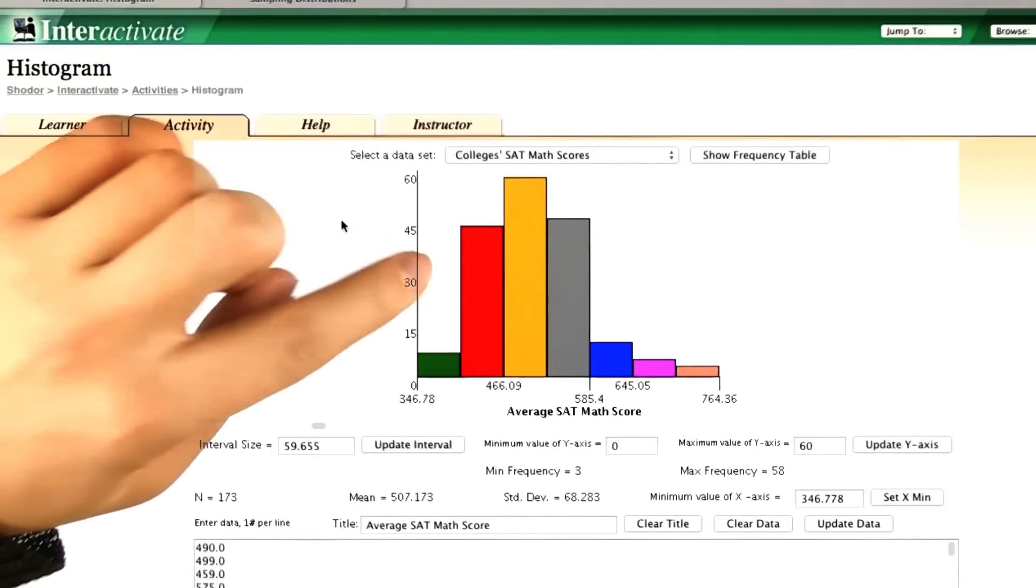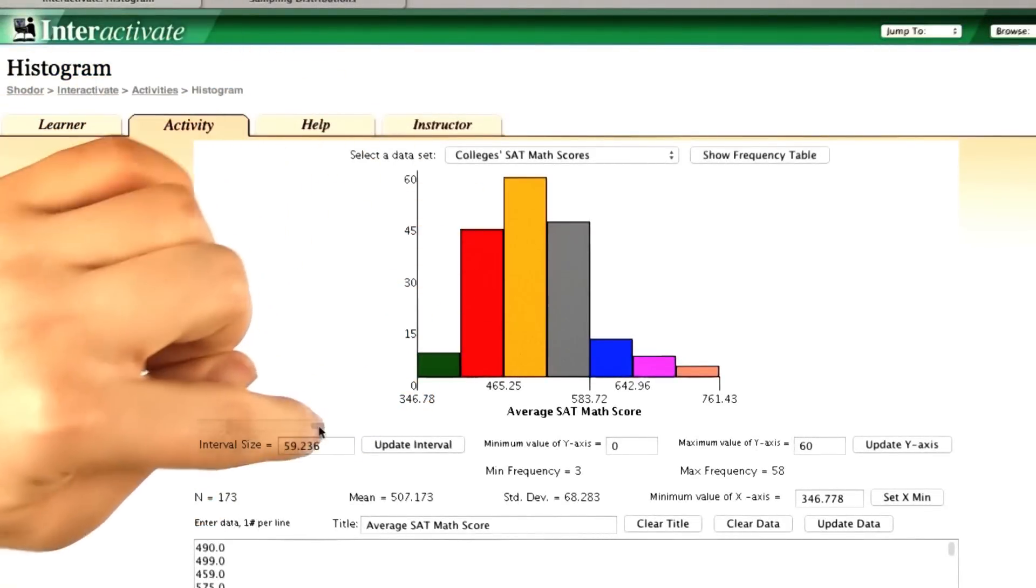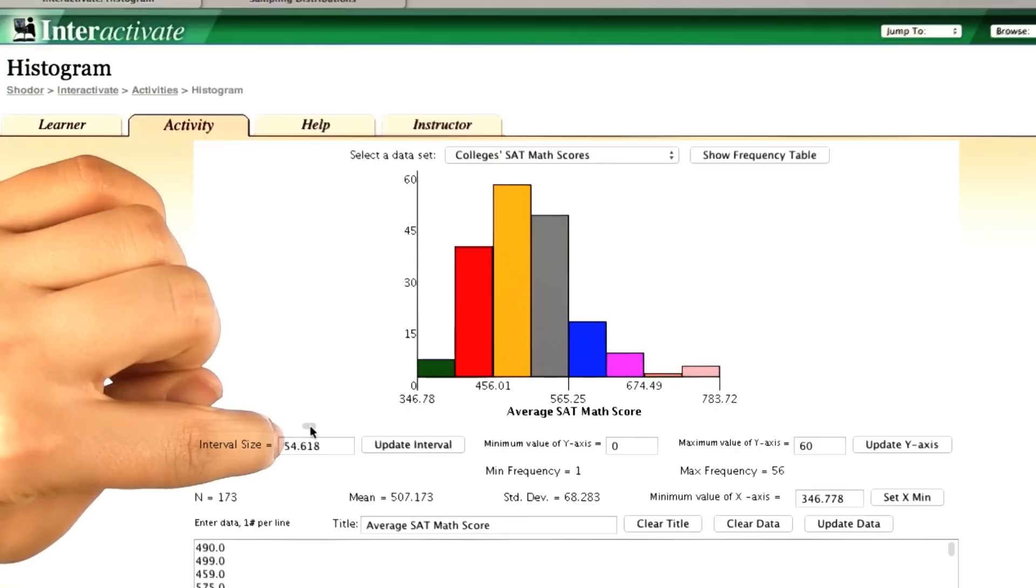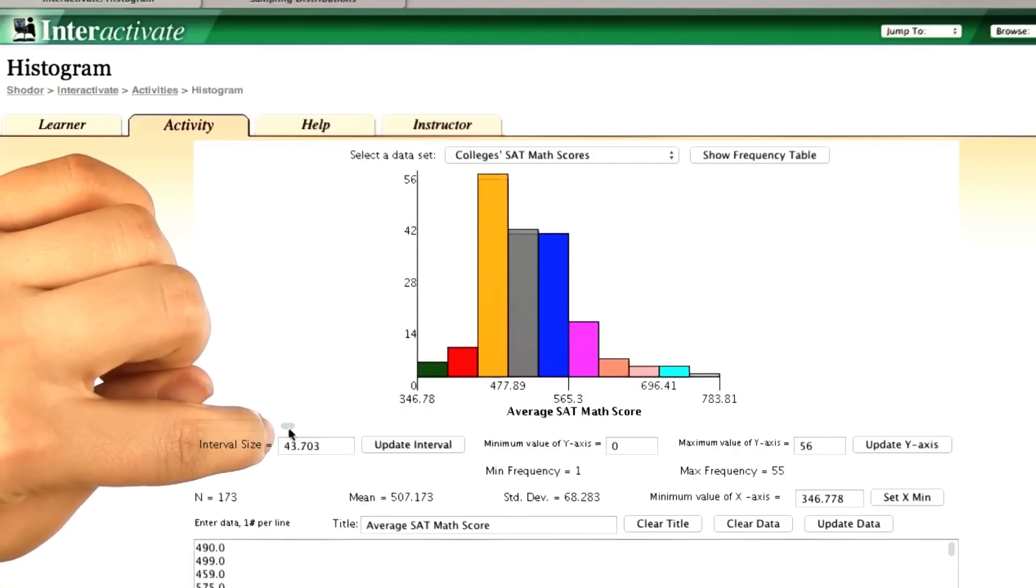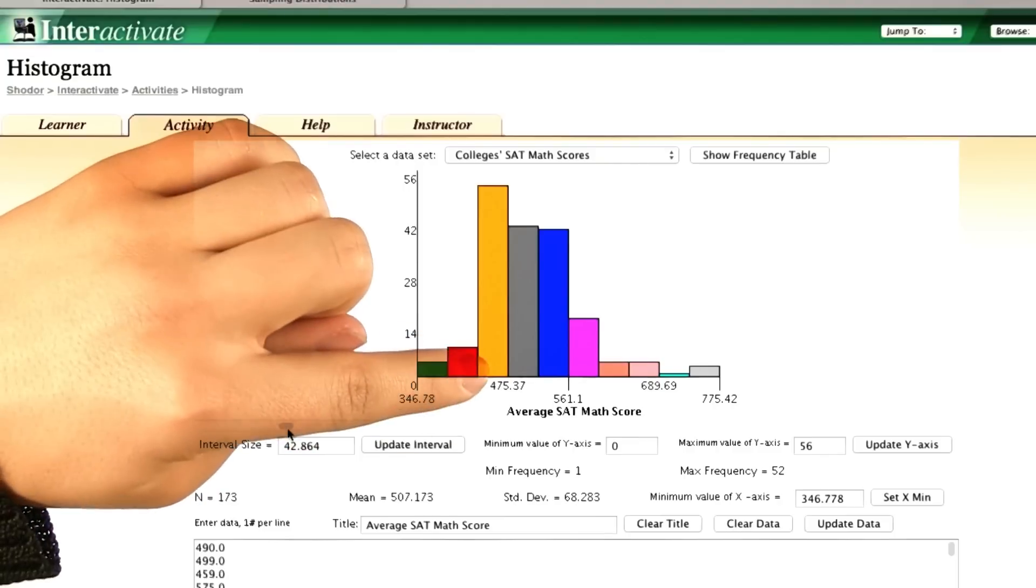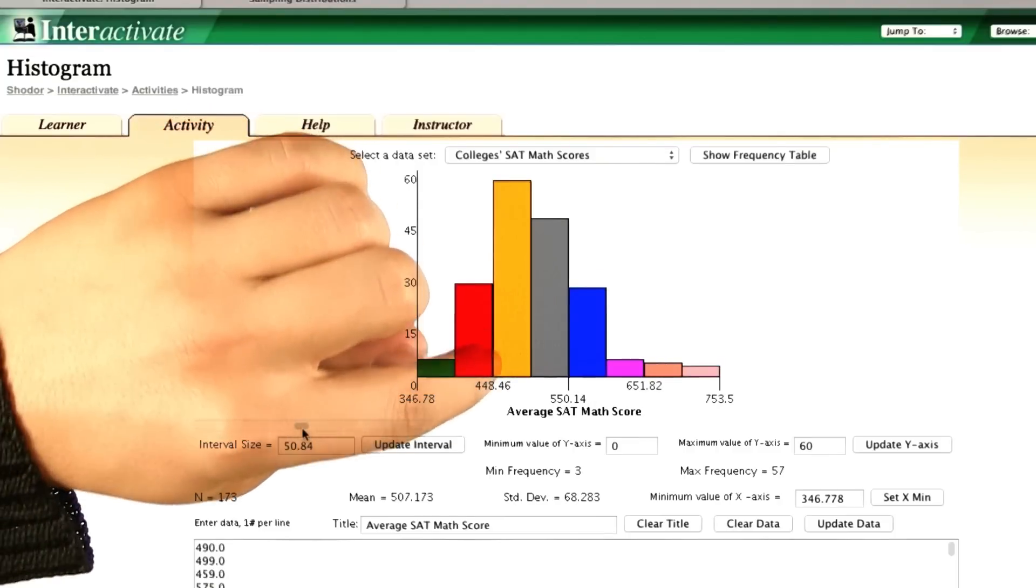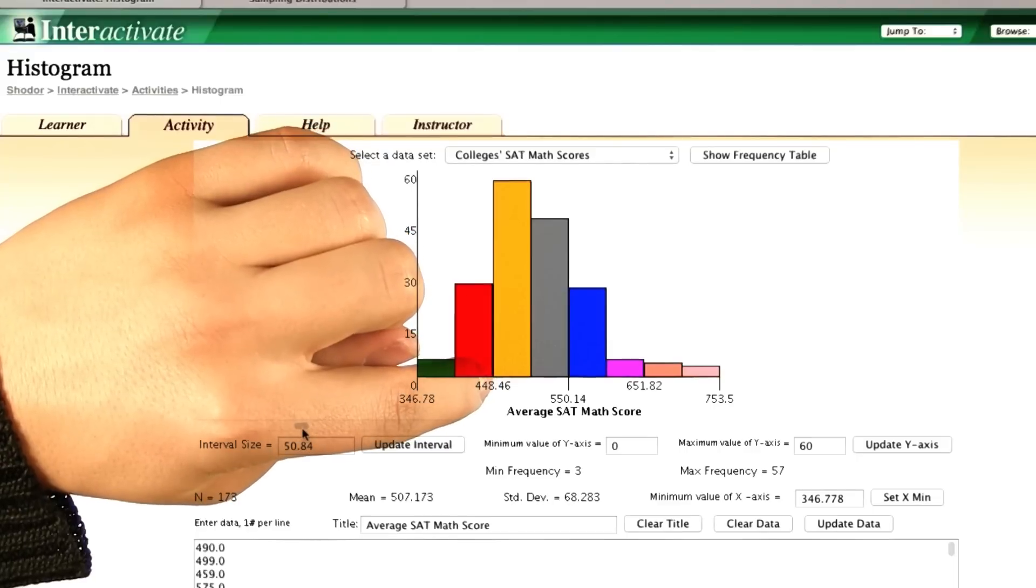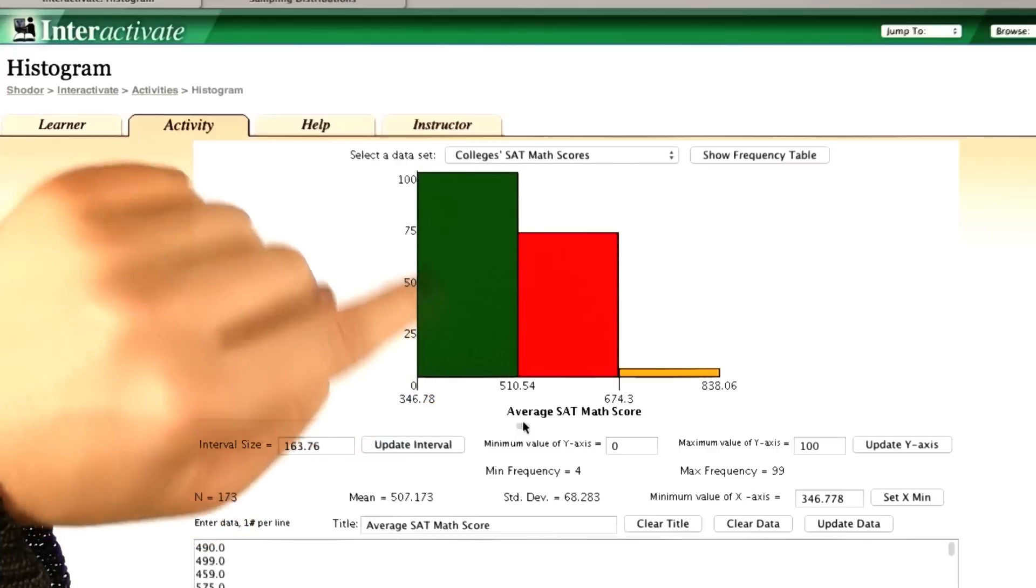Another thing about the mode is that it changes as you change the bin size. So, if we make the bin size smaller, it looks like the mode is going to the left. Here it's at about 470. Here it looks like it starts at about 450.